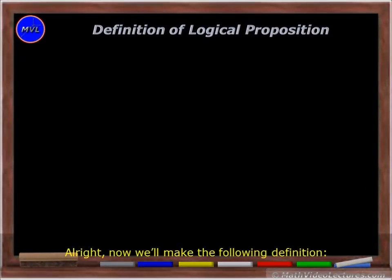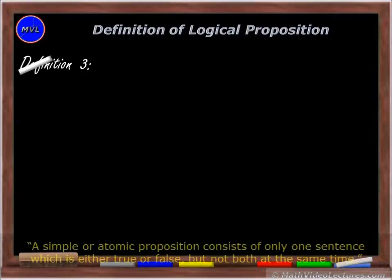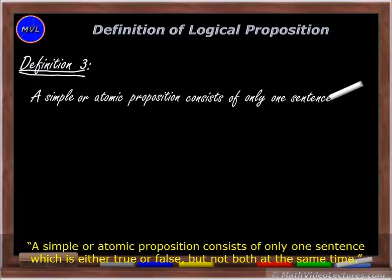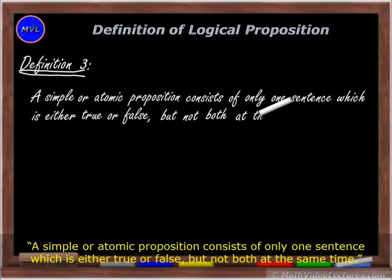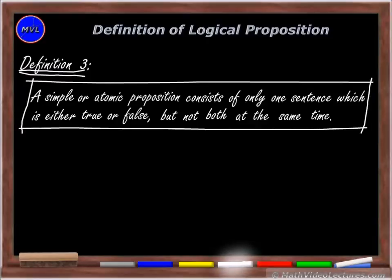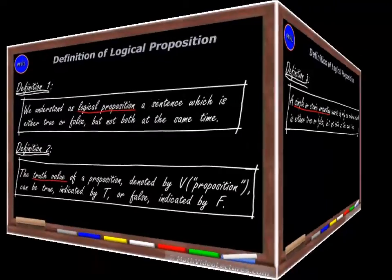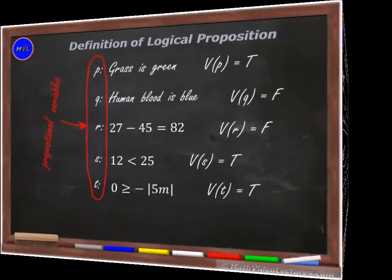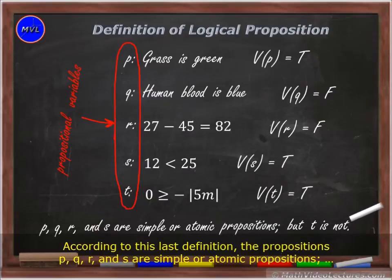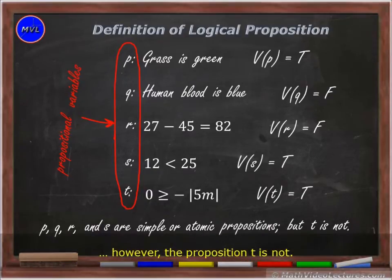All right, now we'll make the following definition. A simple or atomic proposition consists of only one sentence which is either true or false, but not both at the same time. According to this last definition, the propositions p, q, r, and s are simple or atomic propositions. However, the proposition t is not.